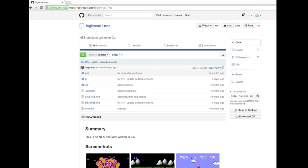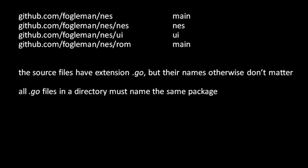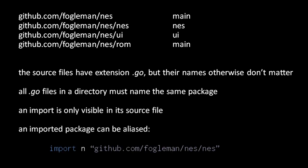Looking now at how a real-world Go program is structured, here's the GitHub page for an NES emulator written in Go. The main package has the import path github.com/Vogelmann/NES, and the two other packages of the program, NES and UI, have import paths that are subdirectories of the main directory. The project also includes one other subdirectory for a utility program that can test the validity of ROM files. Because that package is compiled as a separate program, it too must have the name main. Understand that the names of the source files beyond the extension .go do not matter, and how we split our code into separate files within a package also does not matter — those are simply matters of stylistic choice. Also understand that each import is visible only in the individual file.